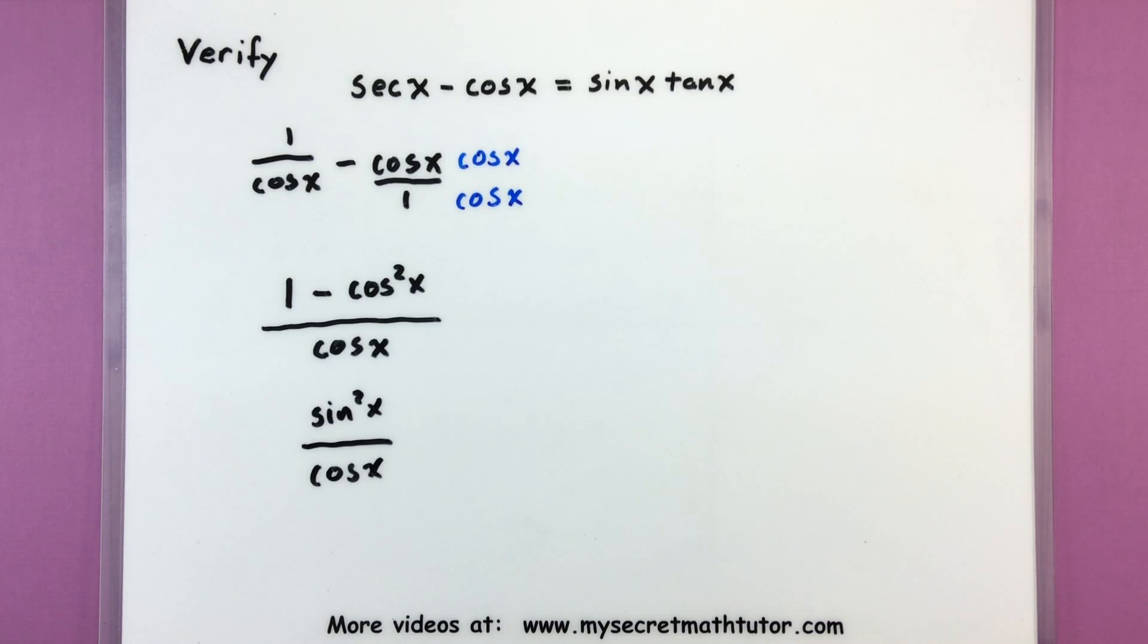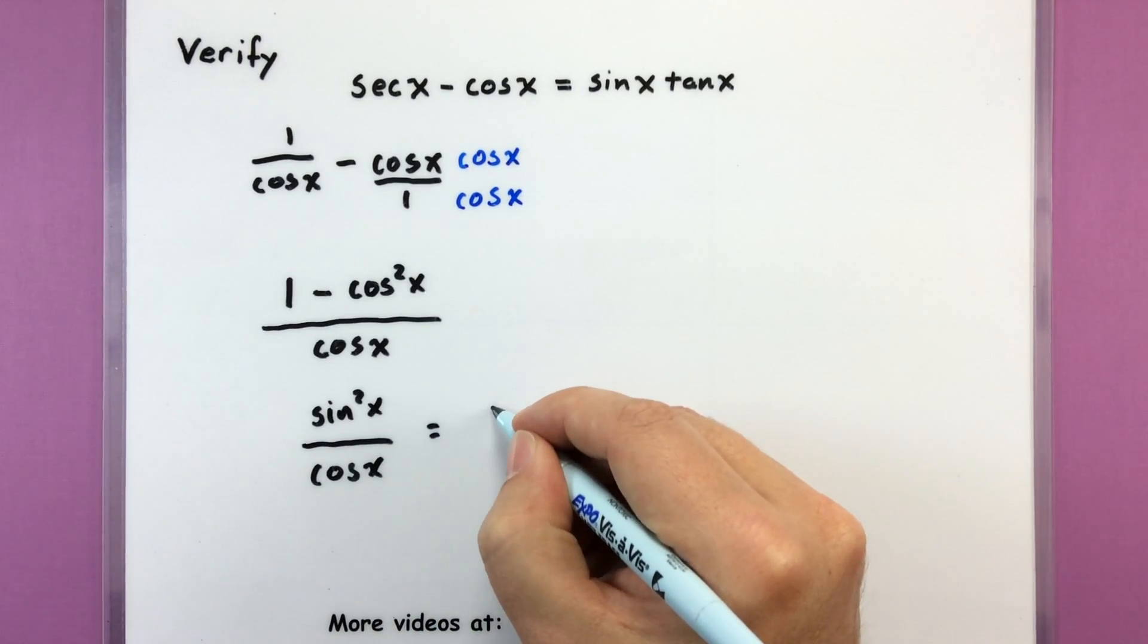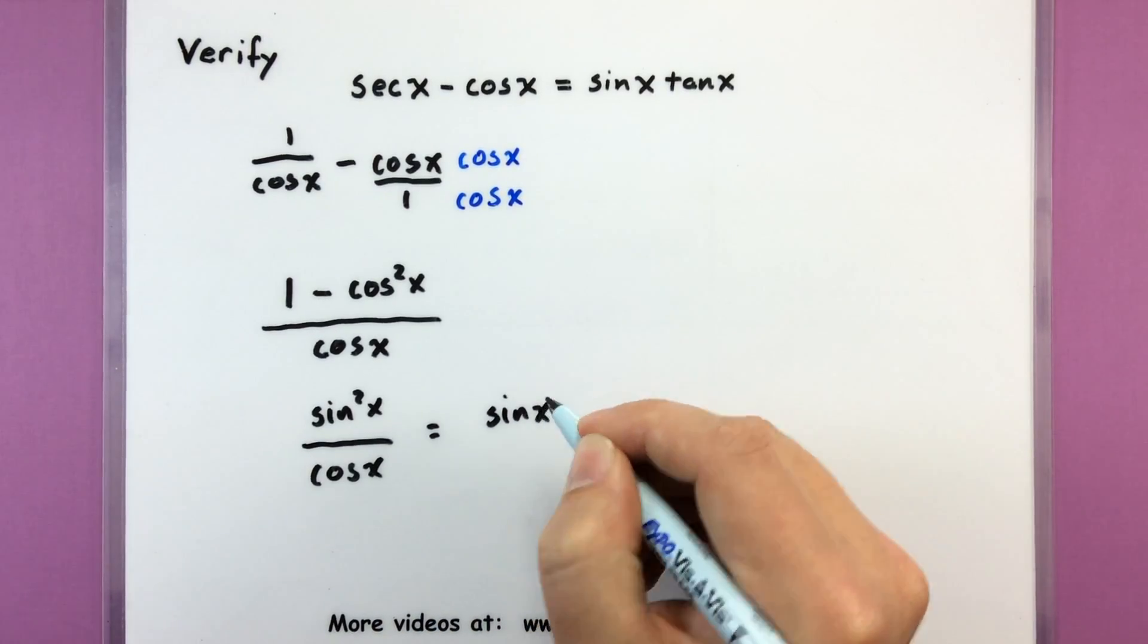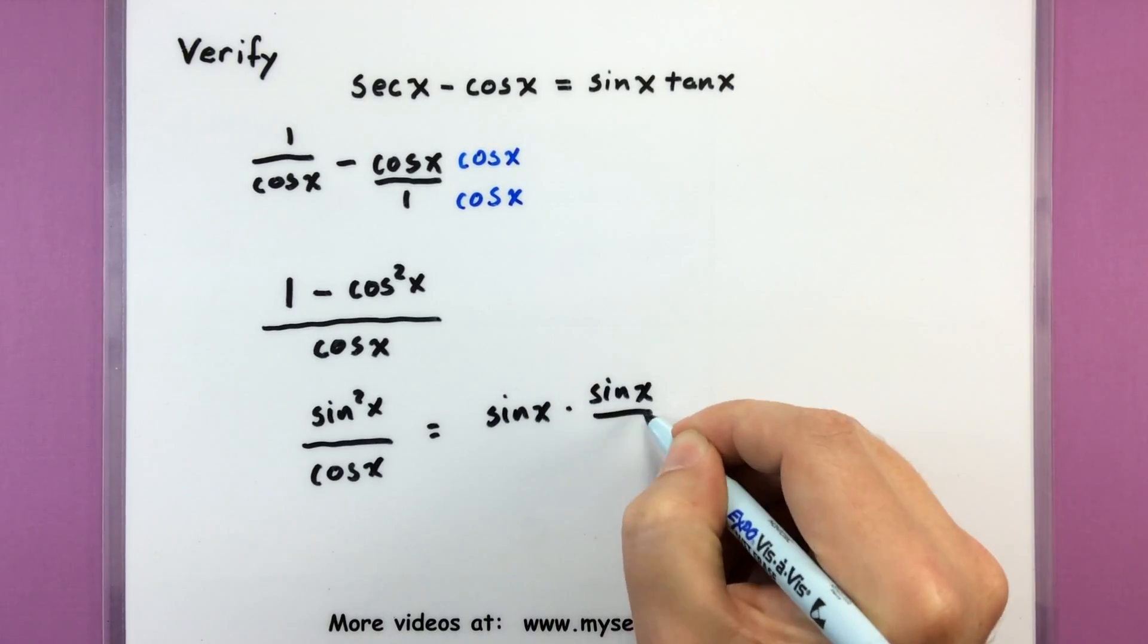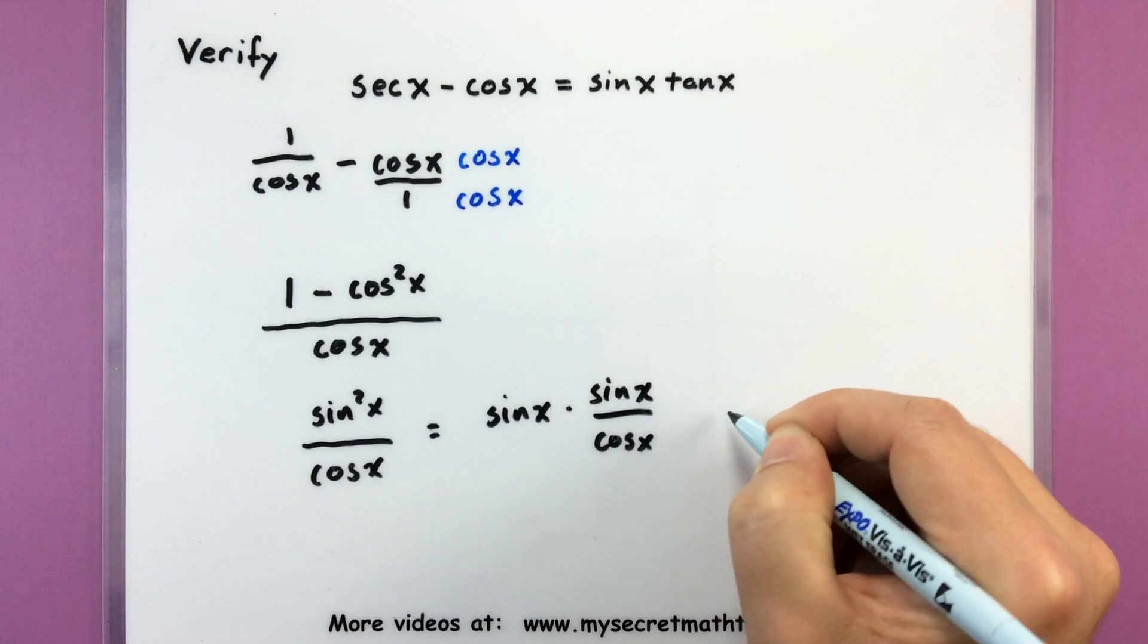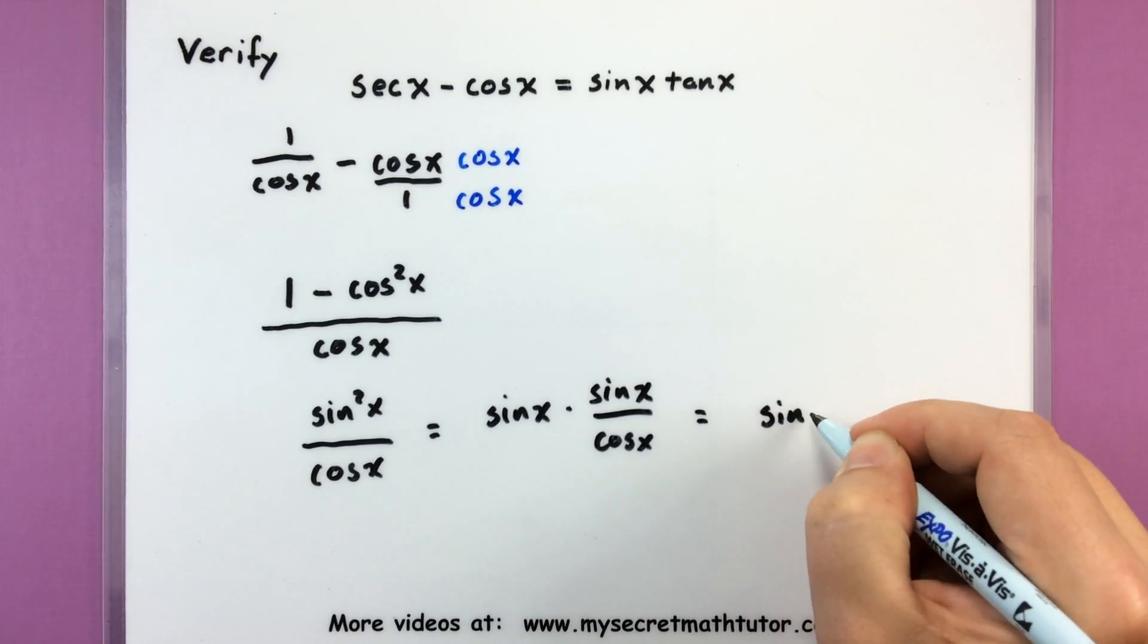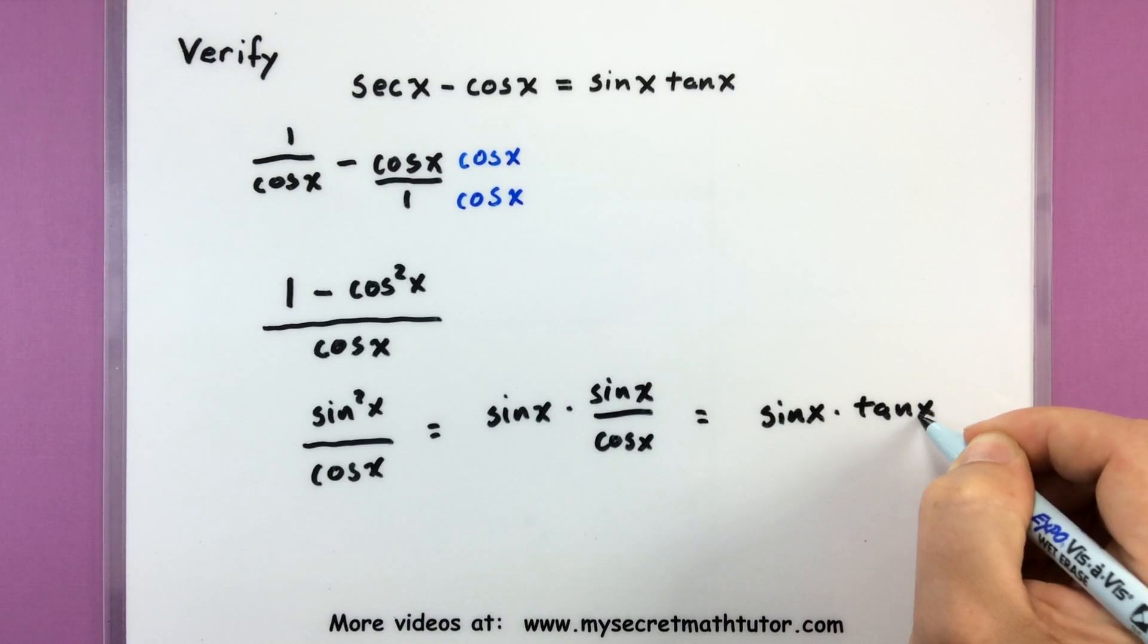And now I can feel like we're getting really close. I'm not dealing with subtraction anymore but I'm still looking for that sine and tangent. So I think one last step we can do is go ahead and split this up. I'll go ahead and split it up into sine that's from the top multiplied by sine over cosine. And sure enough there's our sine of x multiplied by tangent of x.